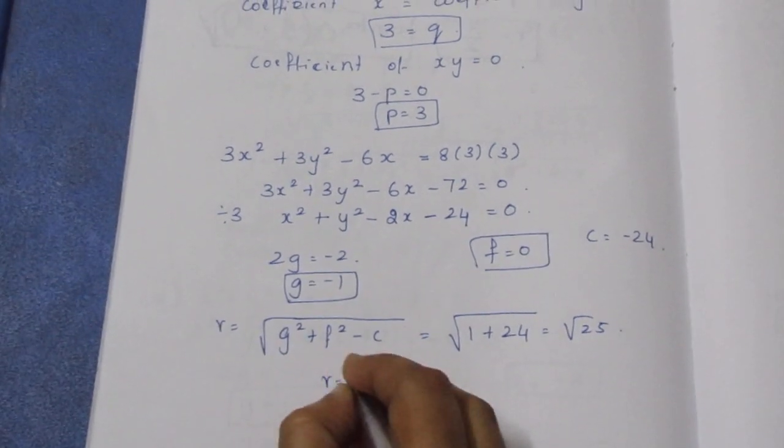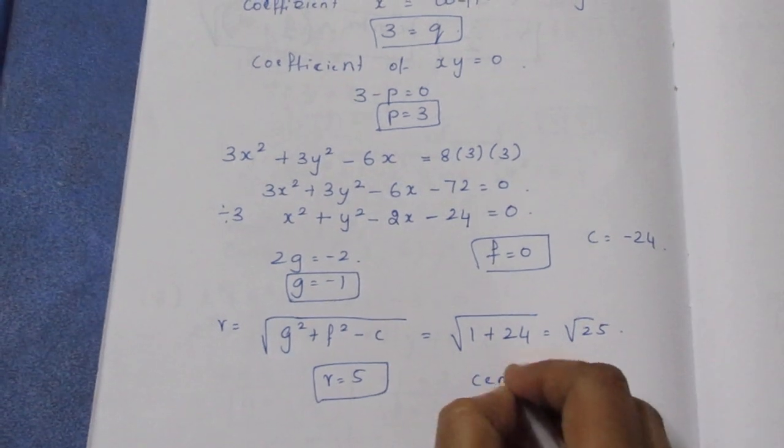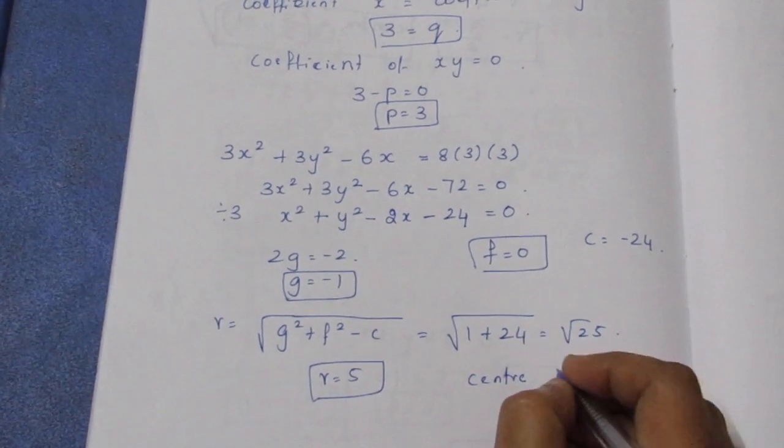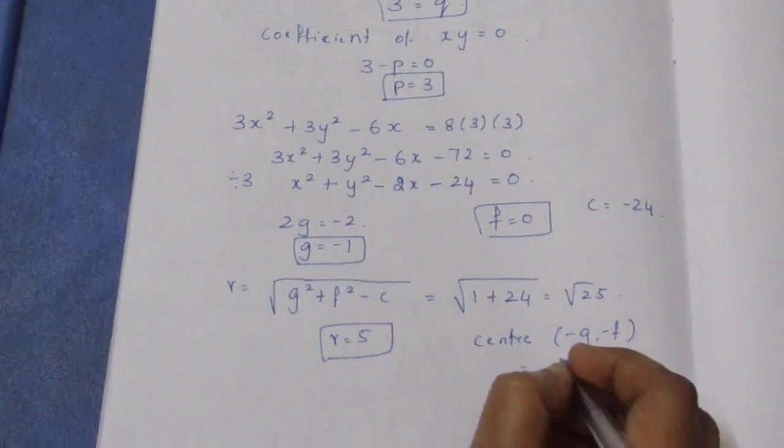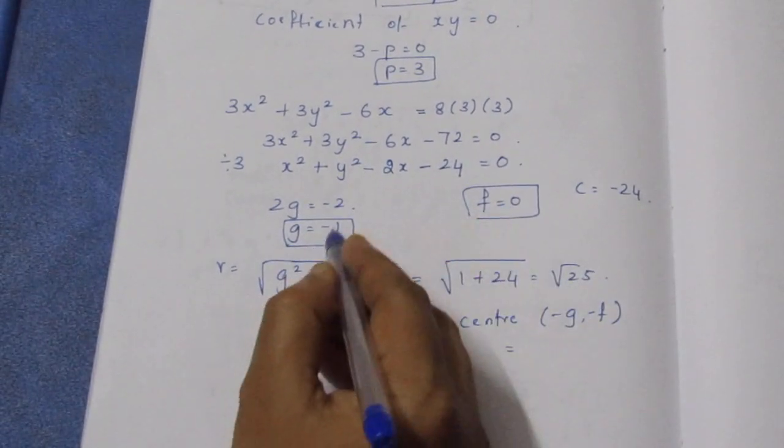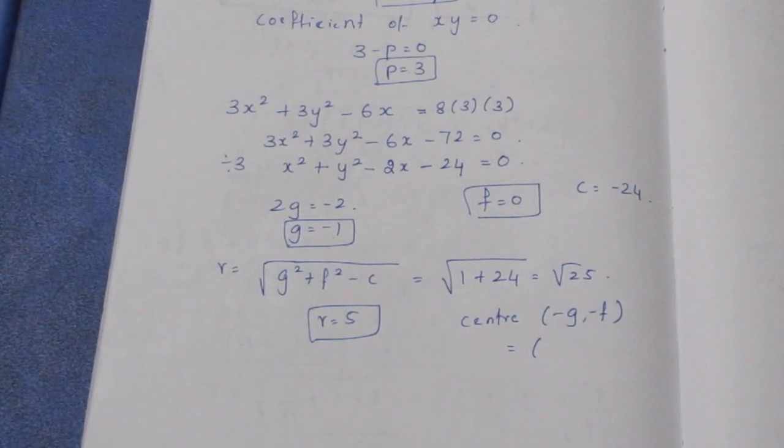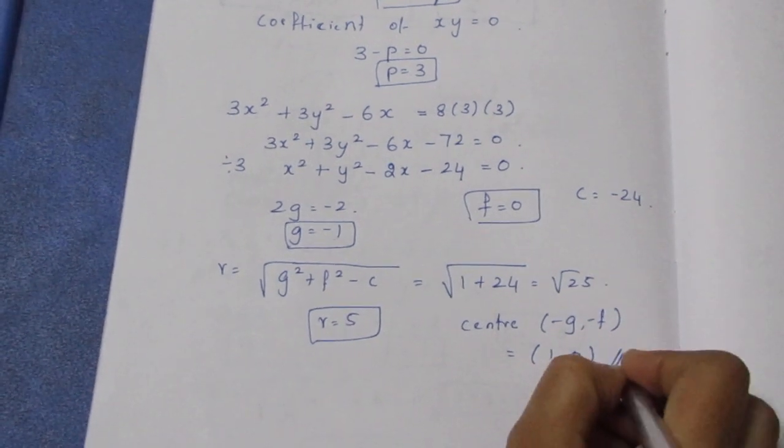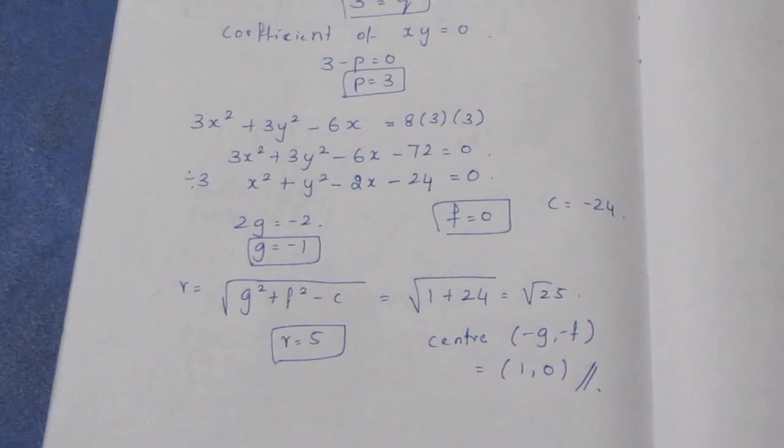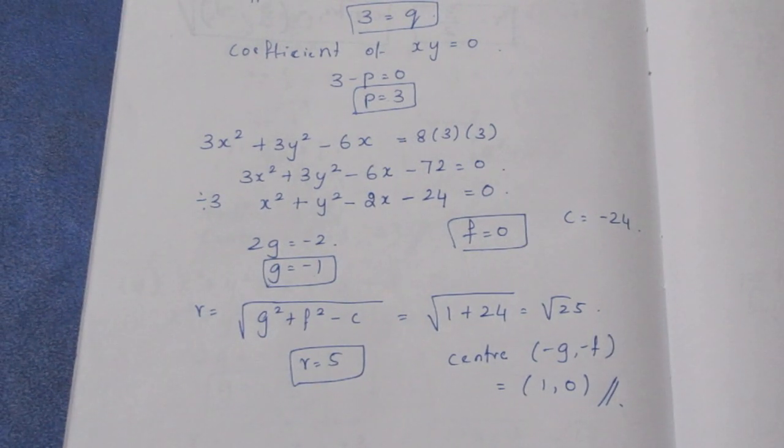The center formula is (-g, -f). So the center is (-(-1), -0) which equals (1, 0). So (1, 0) is the center and the radius is 5. That's the solution. Thank you.